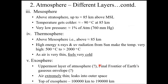Then we have the highest layer of the atmosphere — the exosphere — probably the final frontier of Earth's gaseous envelope. It is extremely thin. The mean free path, or the distance between successive collisions of air molecules, can be many, many kilometres. It leaks into outer space. The top of the exosphere is variously estimated to be 100,000 kilometres to maybe 190,000 kilometres.